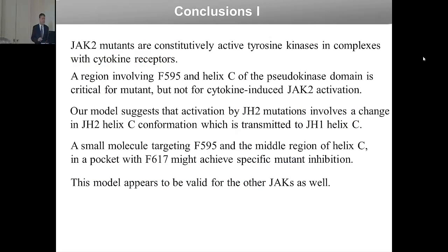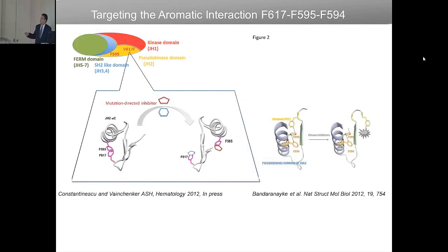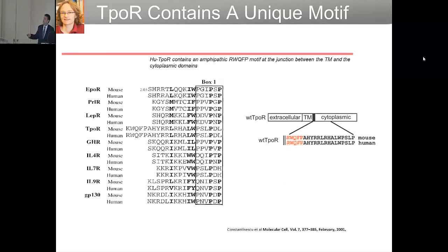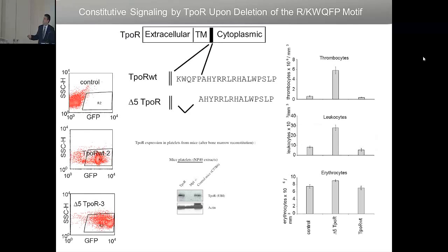In a separate project, the same student looked at the structure of the transmembrane domain of the thrombopoietin receptor. When we aligned all the cytokine receptors — growth hormone, leptin, thrombopoietin — we noticed that the thrombopoietin receptor had an extra insert of 5 amino acids at the onset of the cytoplasmic domain, not present in any other receptor. We asked whether this insert is necessary — and the answer was yes. In the absence of it, we created a receptor called delta-5, and in mice bone marrow reconstitution experiments, we observed thrombocytosis and leukocytosis, suggesting this receptor is now constitutively active. Mutating the residues one by one showed that absence of the tryptophan at the first position leads to receptor activation. These five residues are required to maintain the receptor inactive in the absence of ligand.